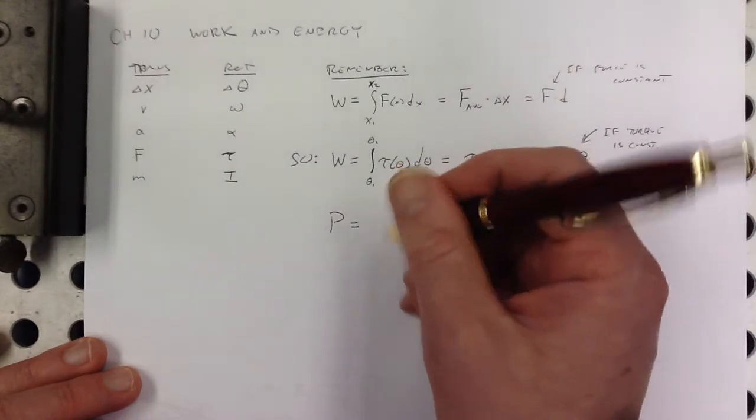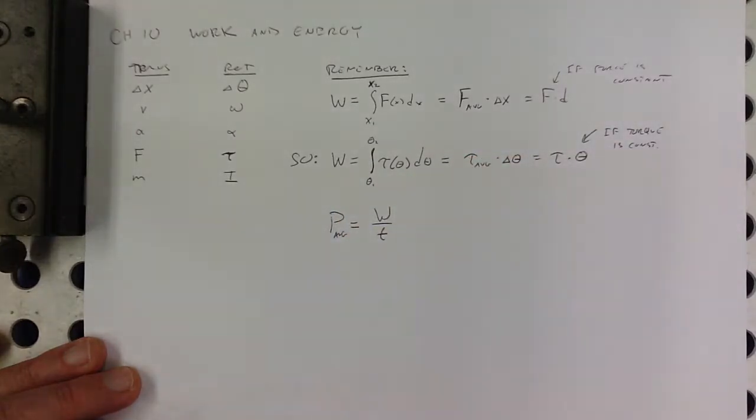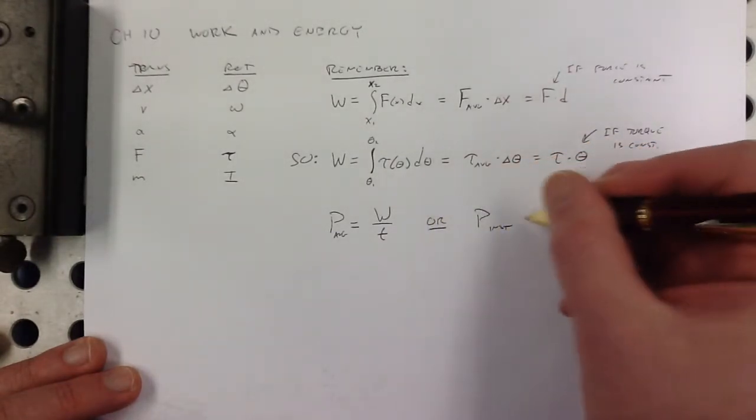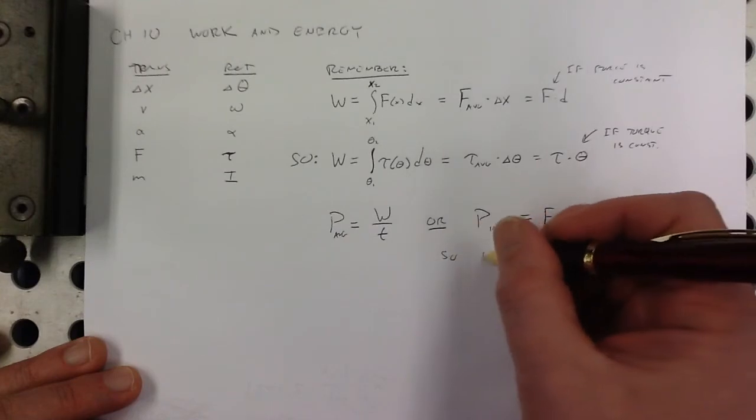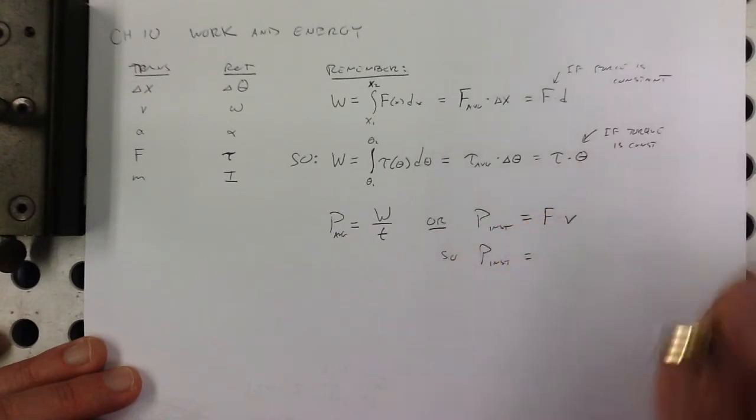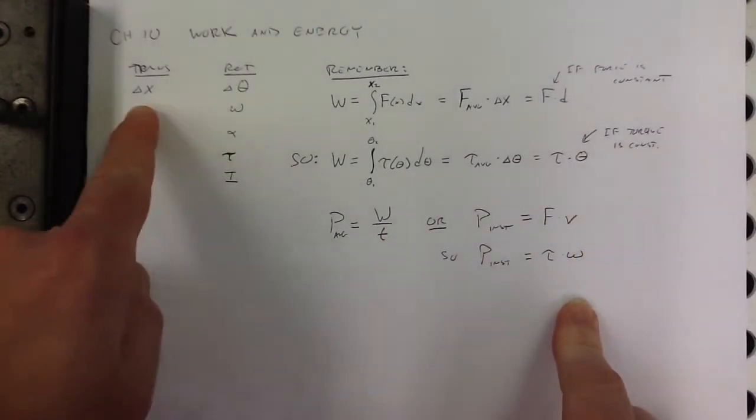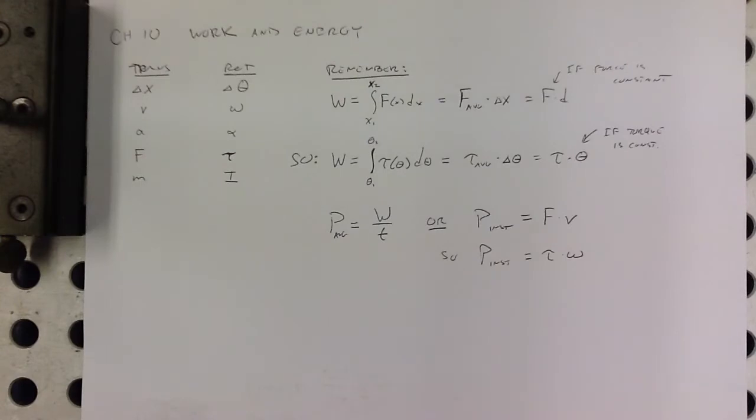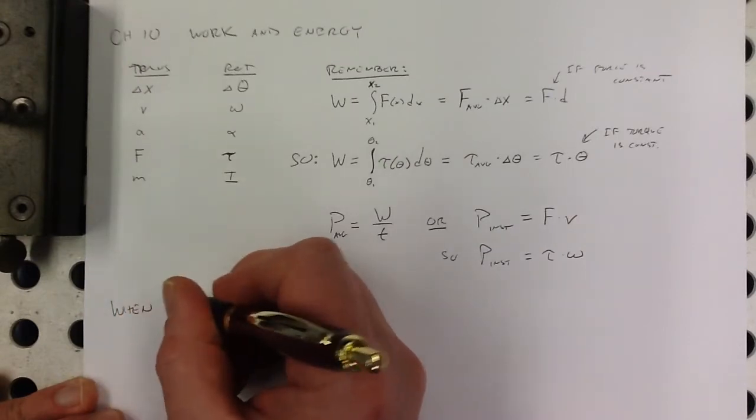Power is equal to work divided by time, that's average power, and that's still true. We just find work in a different way here. Remember, instantaneous power was equal to force times velocity. So here, if we wanted to find this rotationally, that would be torque times angular velocity. We're just dropping in all of the analogs of these things. Force turns into torque, velocity turns into angular velocity.